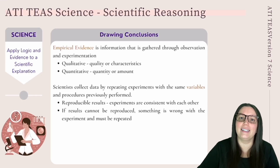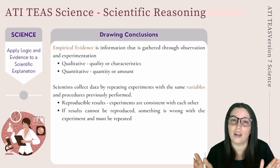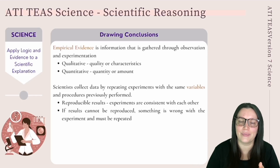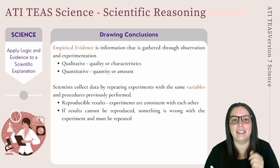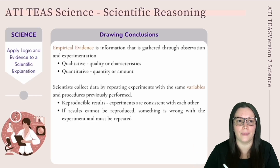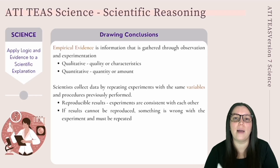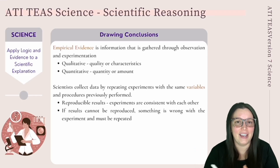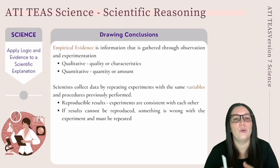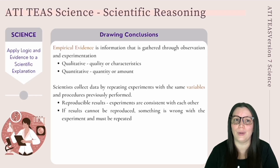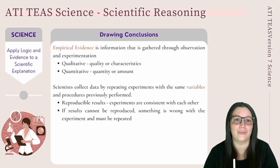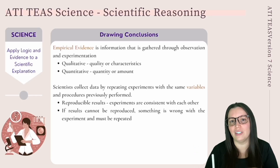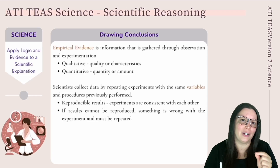For example, a scientist testing a new drug gives it to a group of patients and observes them over time, comparing results to those who did not receive the drug. If the results cannot be reproduced, it means the drug might not be effective, and the experiment would need to be repeated with a new group of patients. If results remain non-reproducible, it indicates the drug is not effective and probably shouldn't be used.